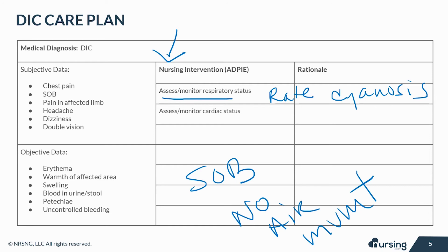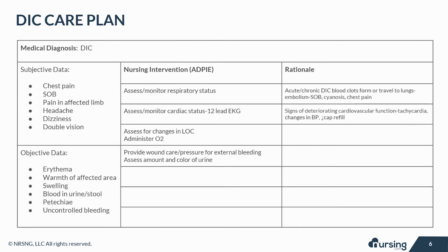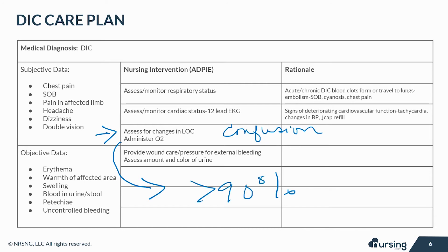You're also going to want to assess and monitor the cardiac status, including a 12-lead EKG as indicated. Tachycardia, changes in blood pressure, and decreased capillary refill are signs of deteriorating cardiovascular function. Assess for changes in level of consciousness because early signs of hypoxia include confusion and irritability. Monitor for signs of stroke as these clots can also travel to the brain. Monitor arterial blood gases and closely monitor oxygen saturation, administering oxygen when necessary, keeping sats greater than 90% for optimal tissue perfusion.